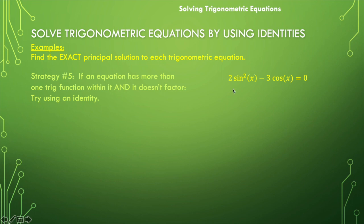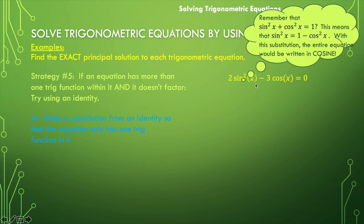Our first example is this equation: two times the sine squared of x minus three cosine of x is equal to zero. I noticed right away that I have a sine function and a cosine function. I really want there to be only one trig function within the equation. So I'm going to think about those Pythagorean identities. Remember that sine squared of x plus cosine squared of x is equal to 1. If I move the cosine squared of x to the other side, I get that sine squared of x is equal to one minus cosine squared of x. If I substitute this whole expression where the sine squared of x is, then the sine function will no longer be part of the equation and the entire equation would be written in the function cosine.